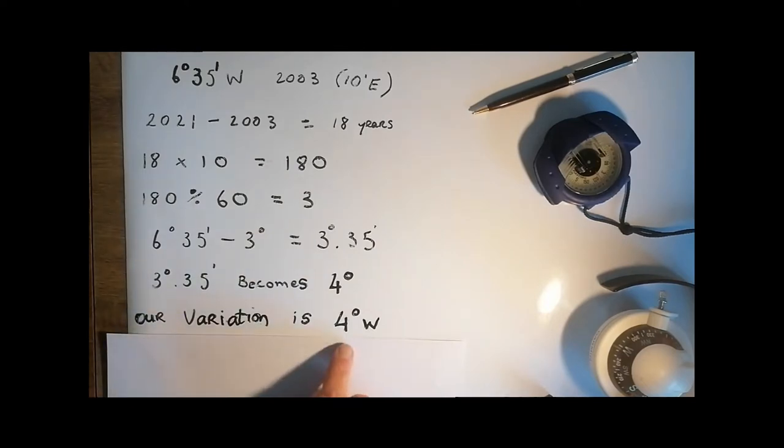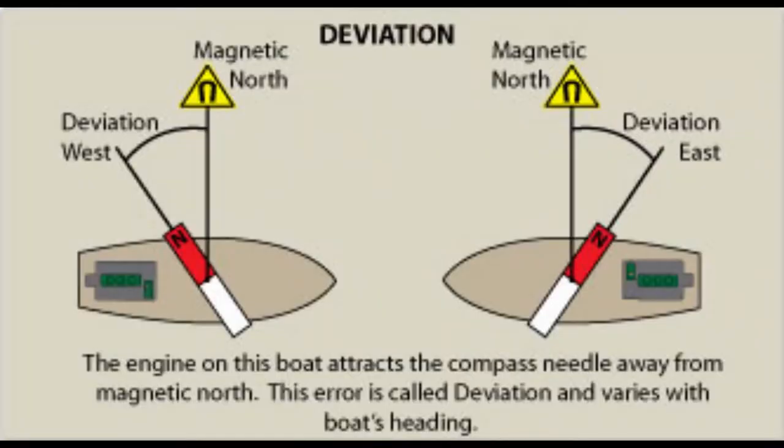The second factor we need to consider is deviation. Deviation occurs when the magnetic field is disrupted by more local interference, and that's parts of the boat. It could be things like the engine or instruments, navigation instruments, the radio, the GPS, even radar can all have an effect on our compass. We need to know how that's affected as well and make allowance for that when we're moving.